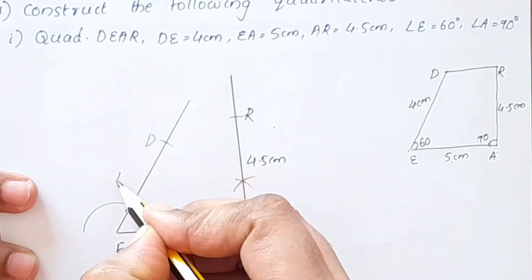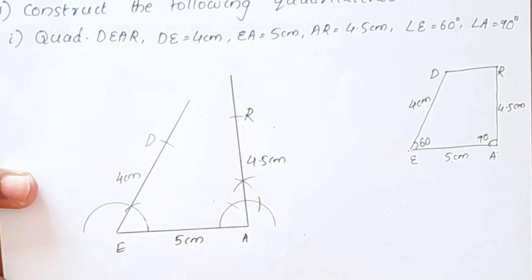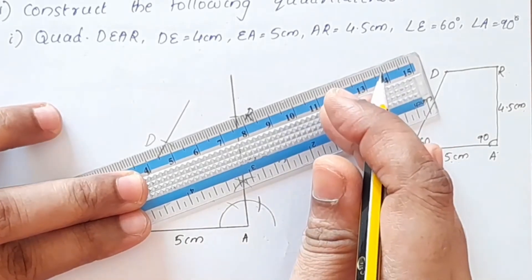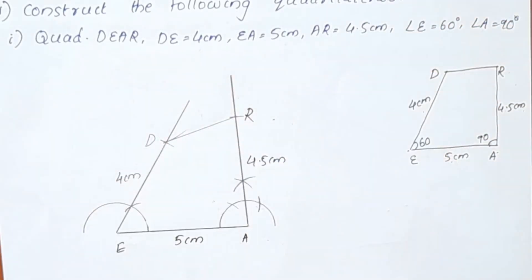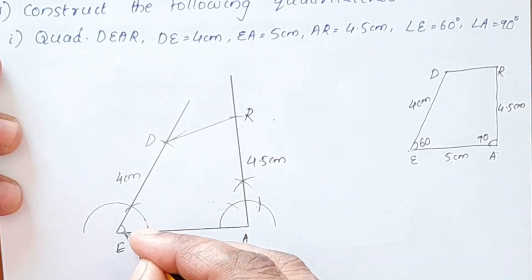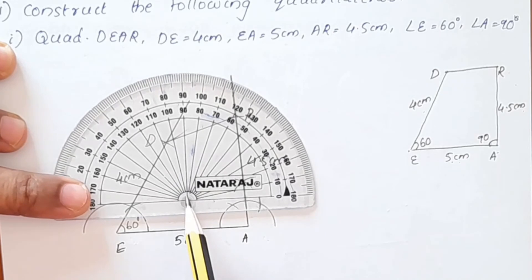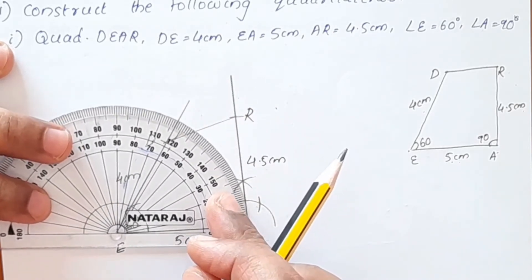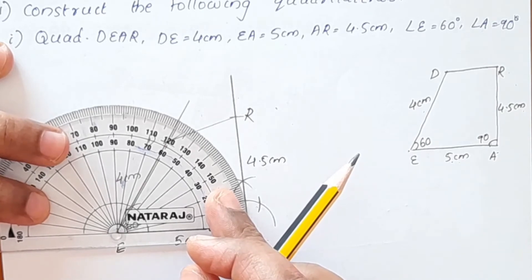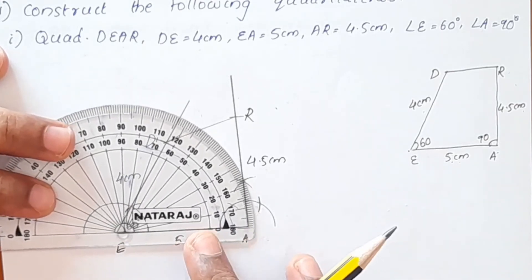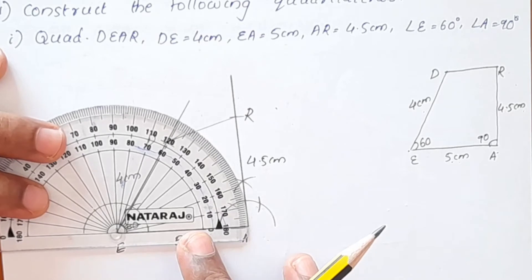This point is D, and DE is 4 cm. We mark point D at 4 cm from E along the constructed ray.